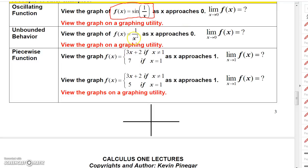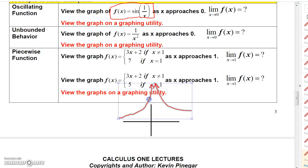For 1 over x squared, as x approaches 0 from the left, it would take off like that, and as you approach 0 from the right, it would take off like that as well. So this would be one of those unbounded behavior cases — that's what would happen for y equals 1 over x squared as x approaches 0.